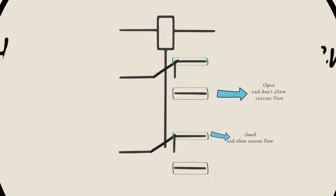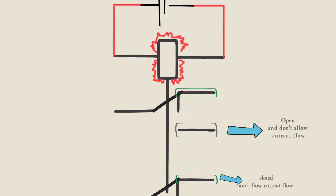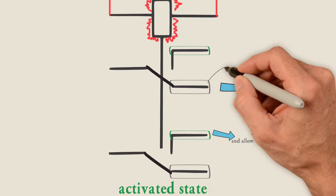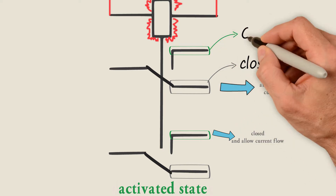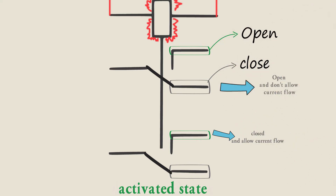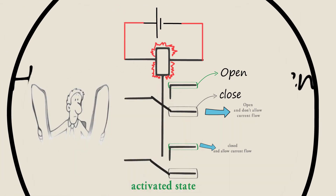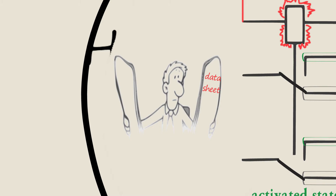In the activated state, the normally closed contacts are open and don't allow current flow. Before we continue, always read the manufacturer's data sheet for the specific relay that you will use.